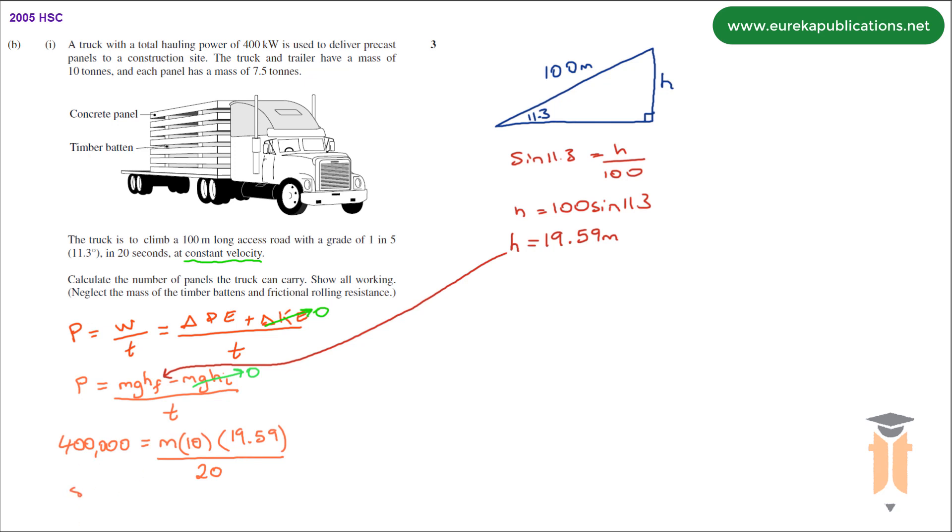Cross multiply and you get 8,000,000 equals 195.9M. Divide both sides by 195.9 and you get M equals 40,830 kilograms which is the same as 40.83 tons. To go from kilograms to tons we divide by 1,000.